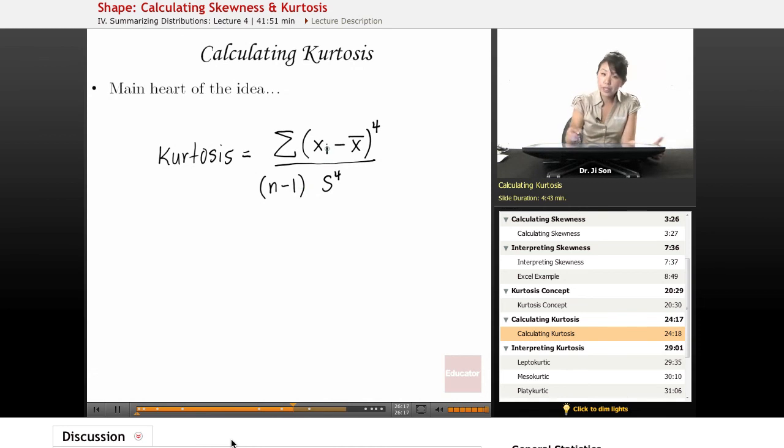But once again, even with kurtosis, you could write it in a number of different ways. You could write it as 1 over n minus 1 times s to the fourth power. And then put your sum of fourth powers here.